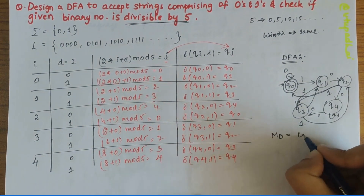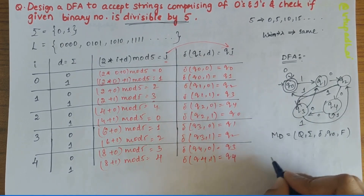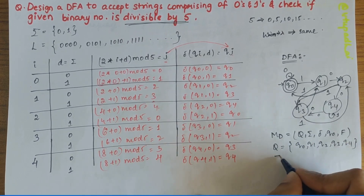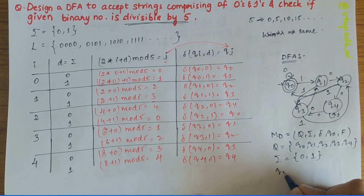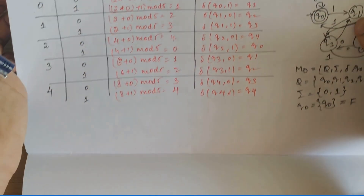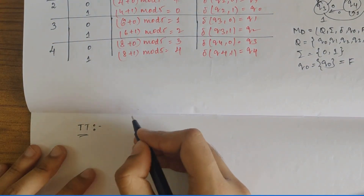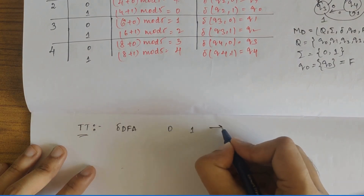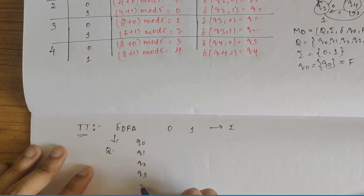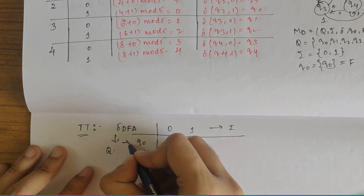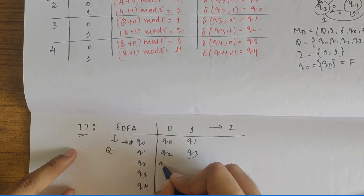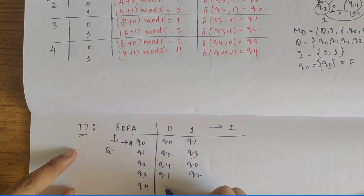Now let's define the formal tuple M = (Q, Σ, δ, q0, F). Q comprises all states: q0, q1, q2, q3, q4. Sigma comprises {0, 1}. The start state q0 is also the final state. The transition table has sigma values across columns and Q values down rows: Q0, Q1, Q2, Q3, Q4.